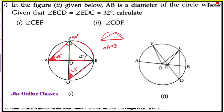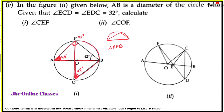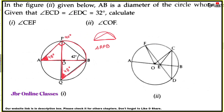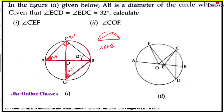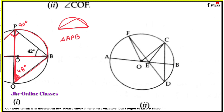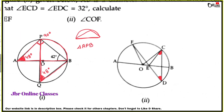Problem 6B: AB is the diameter of the circle with center O. Angles ECD and EDC are both equal to 32 degrees. Find angle CEF and angle COF.